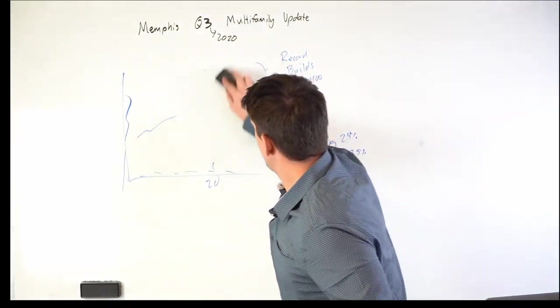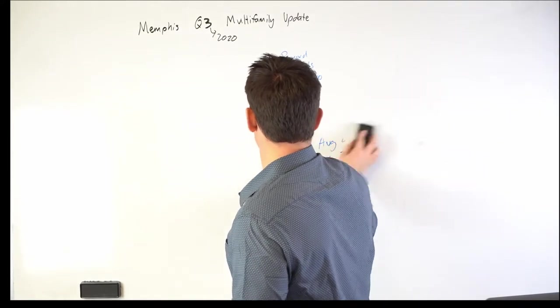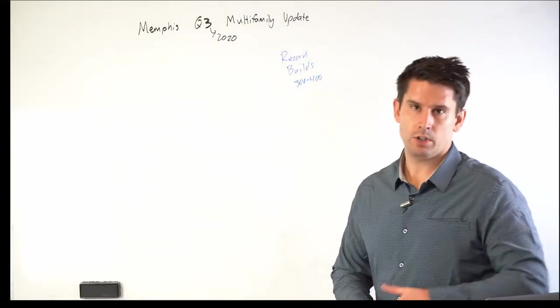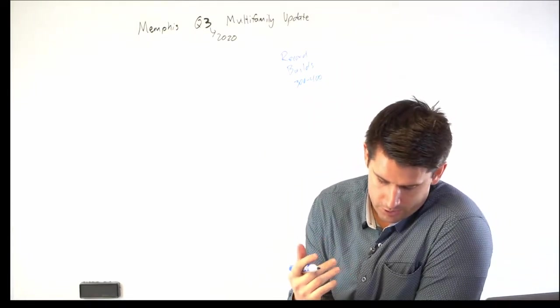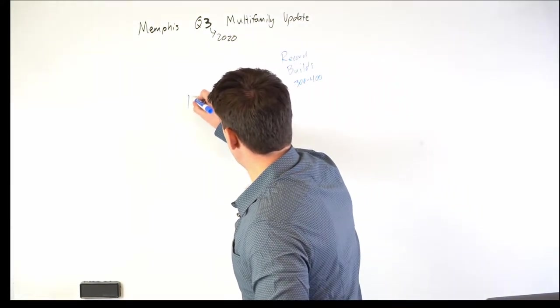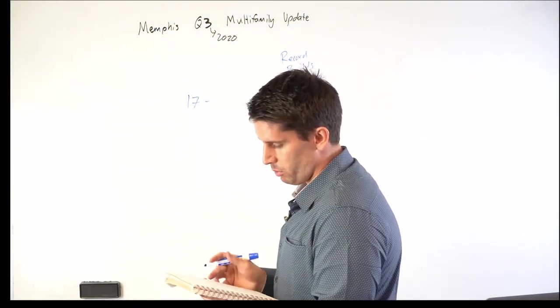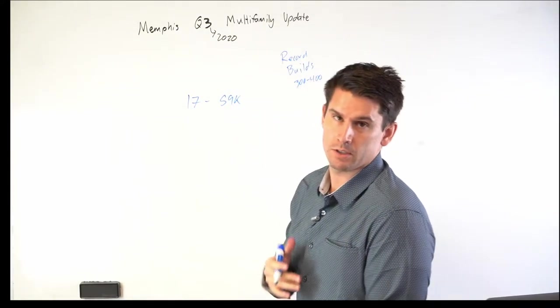So in terms of asking prices, so sales prices, and CoStar, this is all data from CoStar and their predictions. Through 2017, the average price per door was around $59,000 per door sale price. In 2018, it was creeping around $62,000.